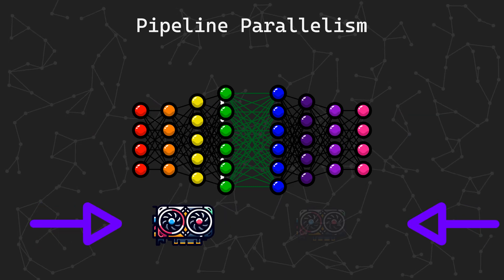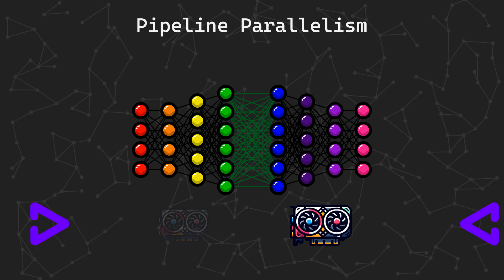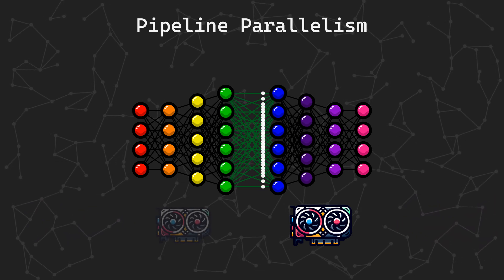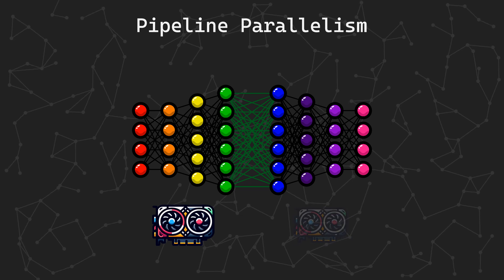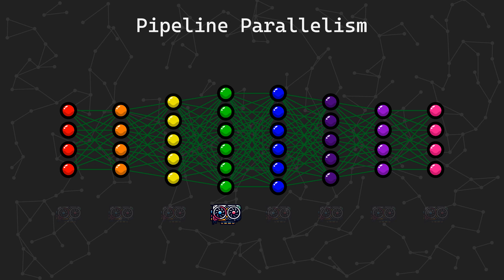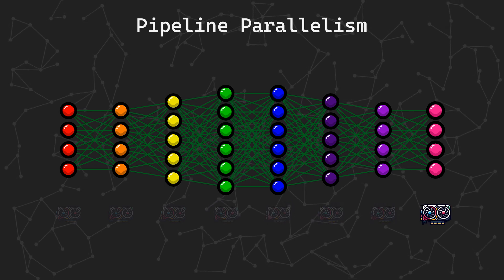However, there is one major issue. When GPU 1 is cooking, GPU 2 is sitting idle, waiting for GPU 1 to finish, and vice versa. This is a natural byproduct of the sequential nature of the layers of a neural network. This problem only gets worse as we increase the number of GPUs. With 8 GPUs, 7 of them are sitting idle at any given time.